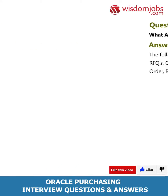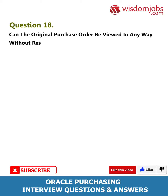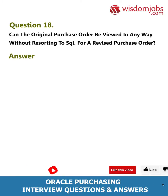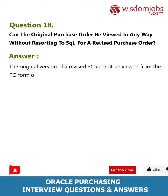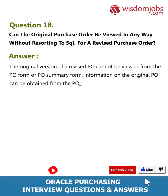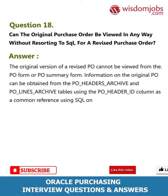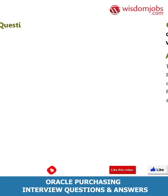Question 18: Can the original purchase order be viewed without resorting to SQL for a revised purchase order? Answer: The original version of a revised PO cannot be viewed from the PO form or PO summary form. Information on the original PO can be obtained from the PO headers archive and PO lines archive tables using the PO header ID column as a common reference — using SQL only.